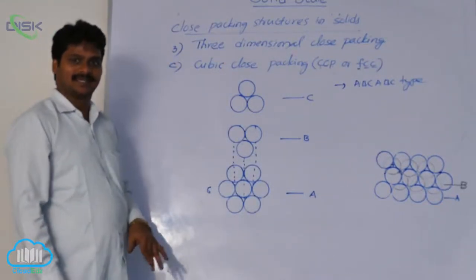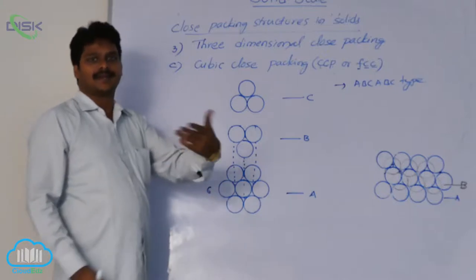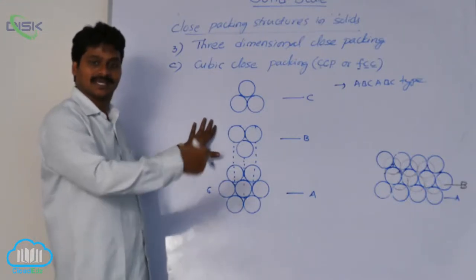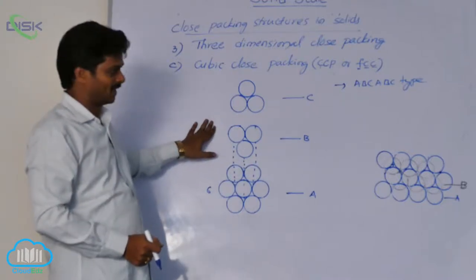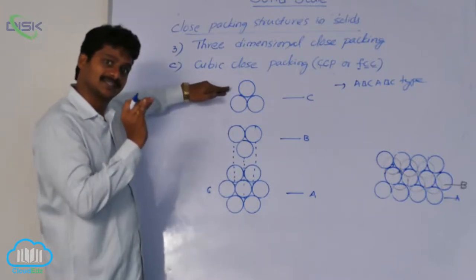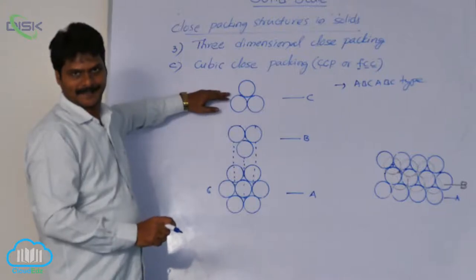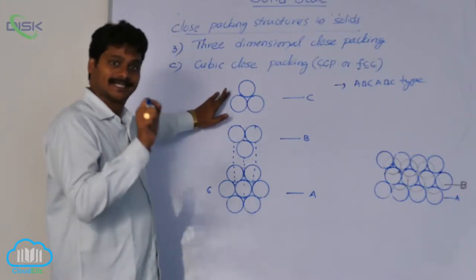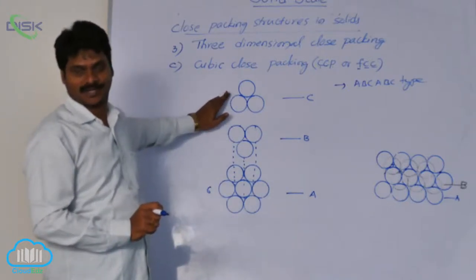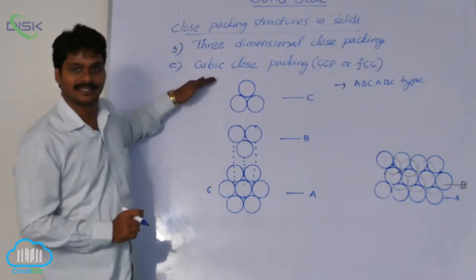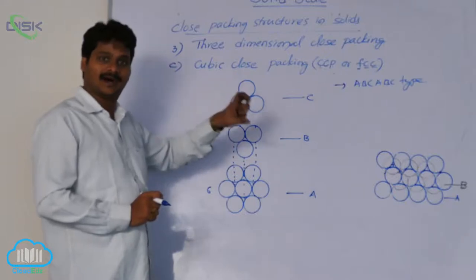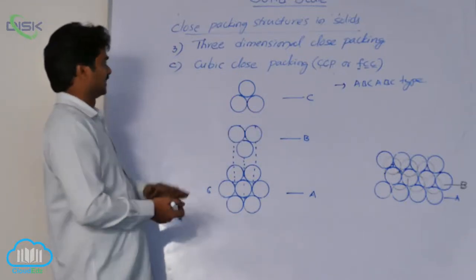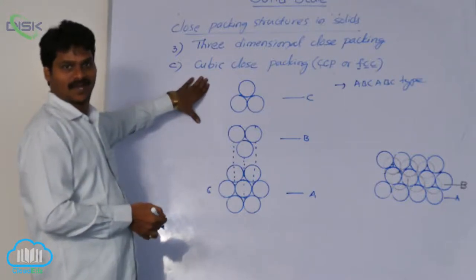In HCP, you will get only A, B, A, B, A, B type layer structure, but in CCP you will get A, B, C, A, B, C type layer structure. Why? Because the arrangement of the third layer is different. In HCP, the third layer spheres occupy tetrahedral voids, whereas in CCP, the third layer spheres occupy octahedral voids. That is why the third layer arrangement is different in CCP or FCC.